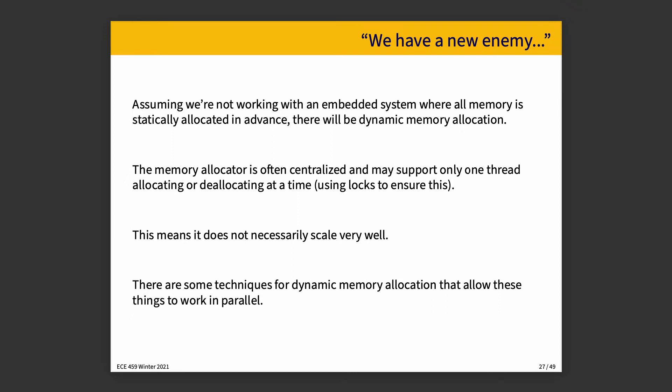Assuming we're not working with an embedded system where all memory is statically allocated, there's dynamic memory allocation. In C this is malloc; in C++ it's new; in other languages it happens when you invoke a constructor. The memory allocator can be centralized and may support only one thread allocating or deallocating at a time. This is one reason why signal handlers have restrictions in C code. Memory allocation can be a significant bottleneck. There are techniques for parallel memory allocation and a good OS or runtime should provide one, but requesting many memory allocations might involve a lot of coordination.